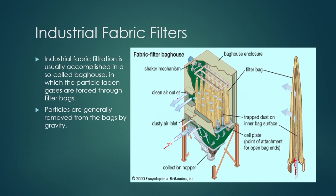Clean air comes out from the other side of the bag. This is basically a filter bag. After a certain time of separation, particles deposit on the surface of the cloth and are then collected by a shaking mechanism — by shaking the bag after stopping the dirty air inlet. This is how the bag filter works in industry to separate particulate materials.